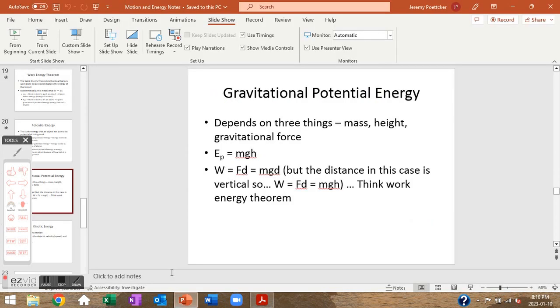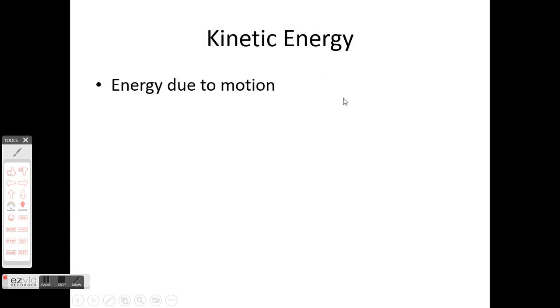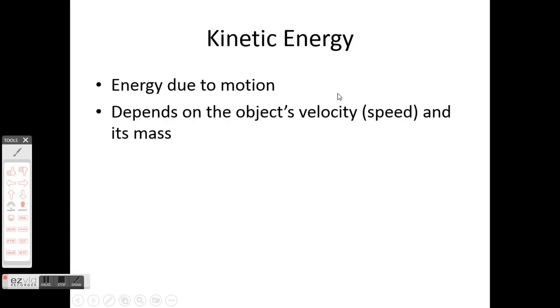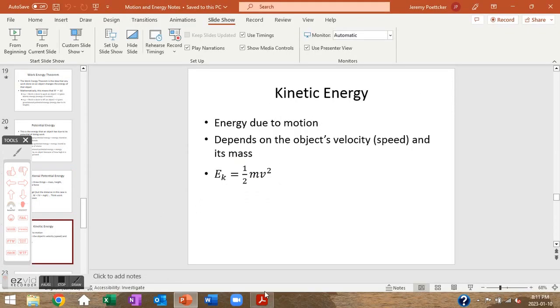That quickly takes us back to kinetic energy — energy due to motion. It depends on the object's speed (velocity) and its mass. The formula is Ek = ½mv². Let's take a look at a couple of quick examples.